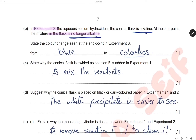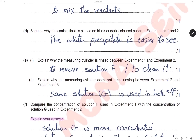State why the conical flask is swirled as solution F is added in experiment 1: we swirl the flask to mix the reactants. Explain why the conical flask is placed on black or dark-colored paper in experiments 1 and 2: the reaction produces a cloudy white precipitate, and the white precipitate is much easier to see against a black or dark-colored background.